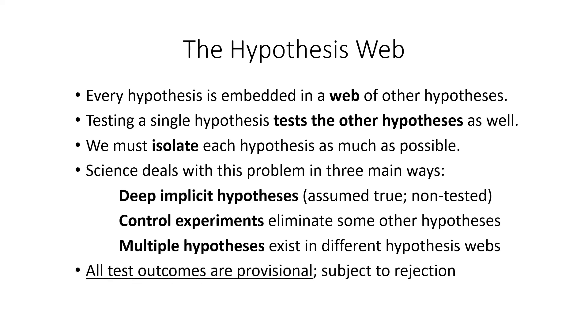Notice, of course, that all test outcomes are provisional, subject to rejection or modification and retesting and so on. So, although the web of hypotheses is a genuine situation, science can deal with it by being aware of it and taking these steps. And that's it.